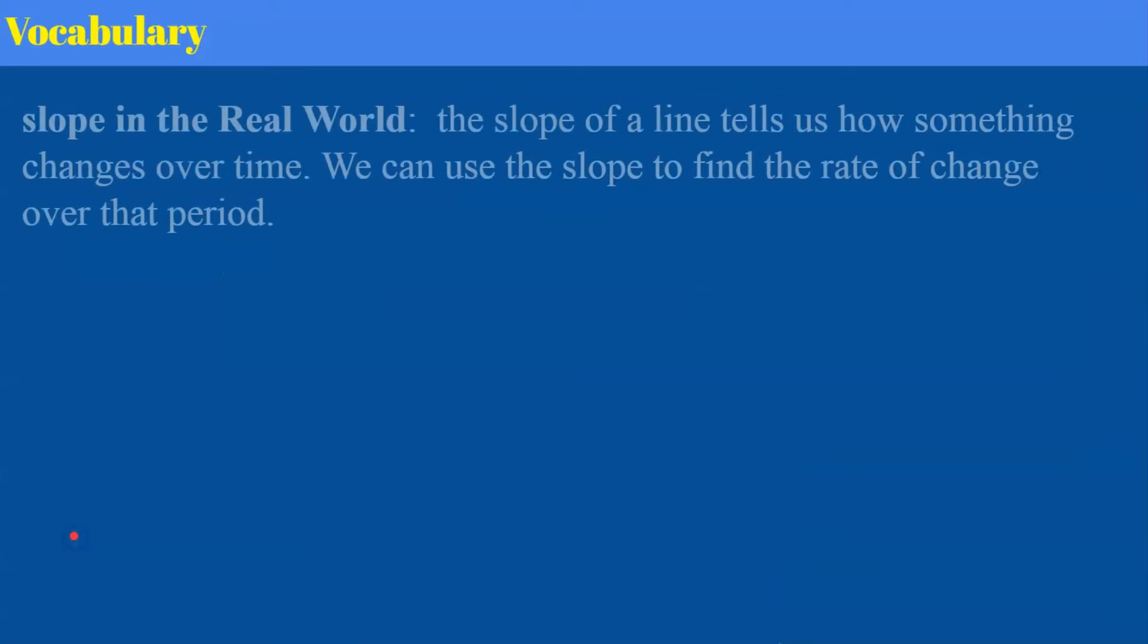So let's review some vocabulary. Today we're going to be talking about slope in the real world. So we're going to look at graphs of real world situations and the slope of the line tells us how something changes over time. We can use a slope to find the rate of change over that period.